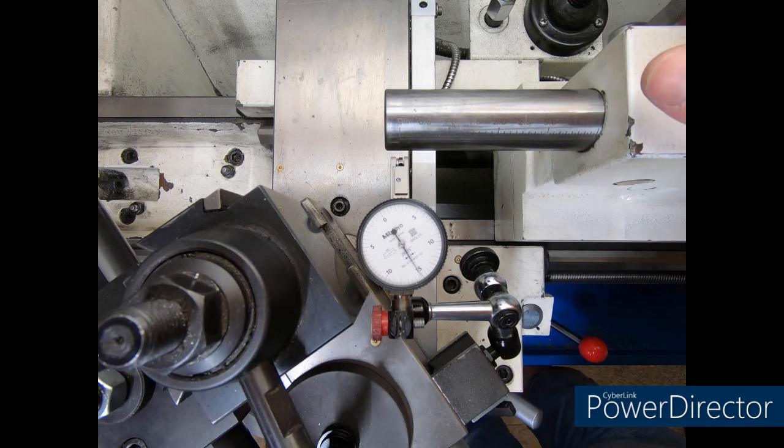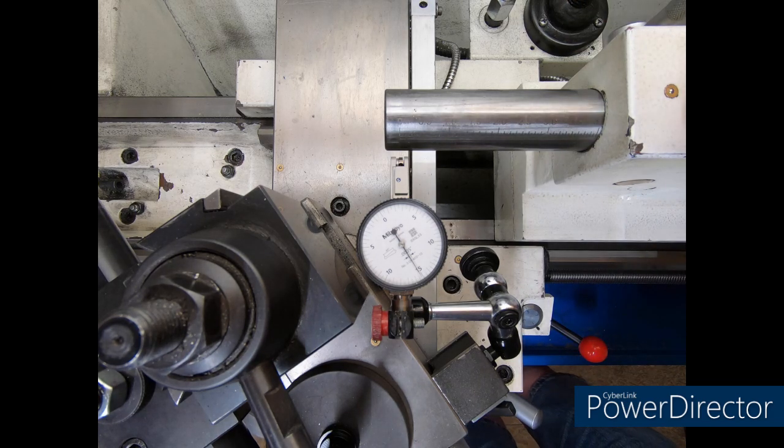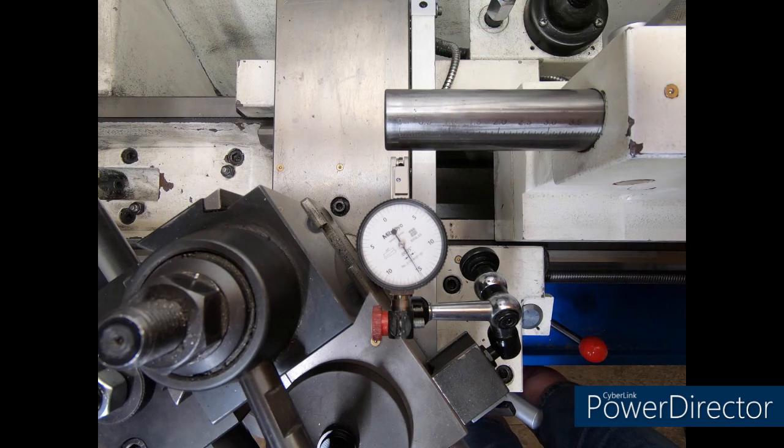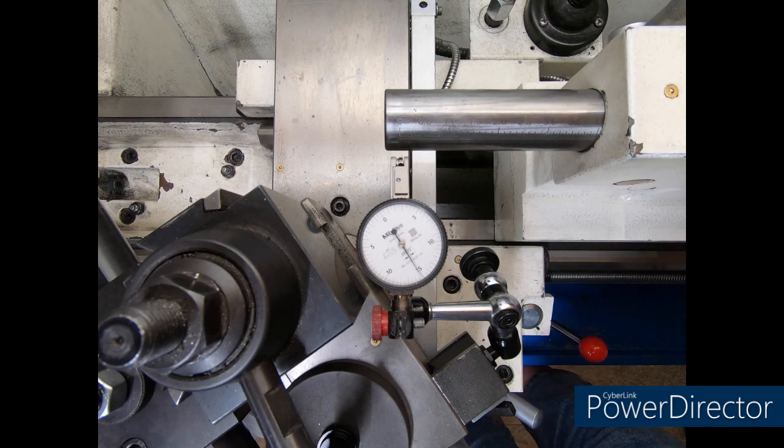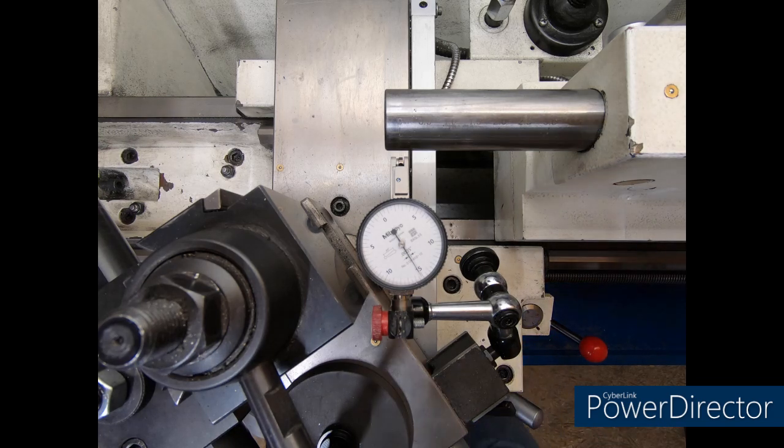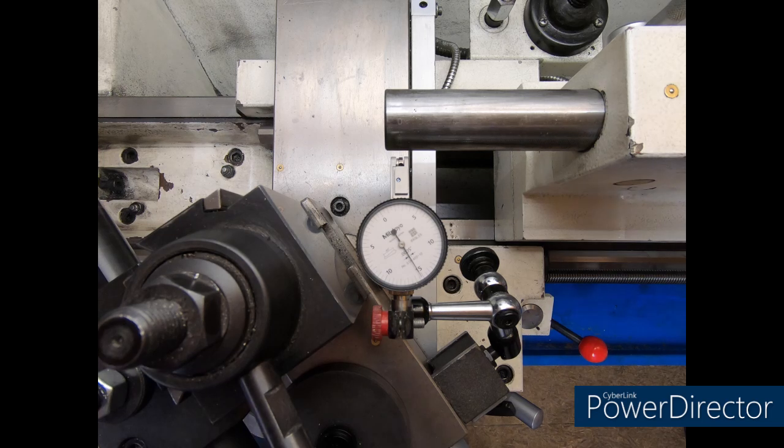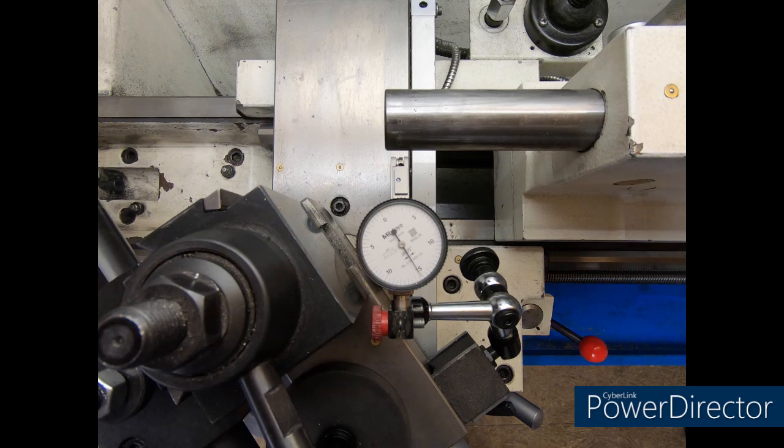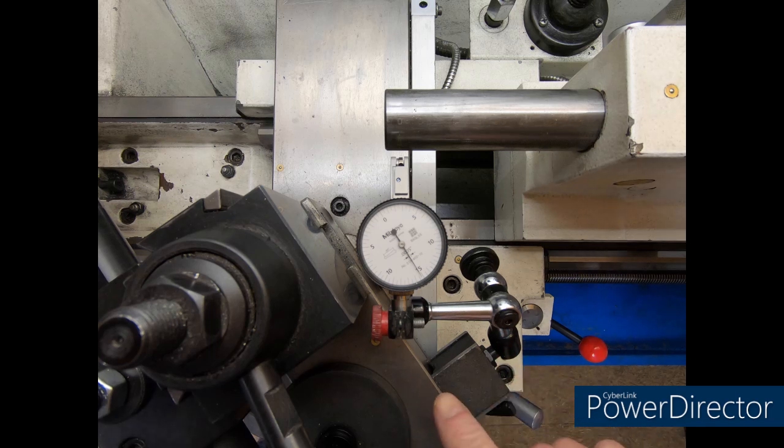I took a protractor and set my compound to a rough 55 degrees, then I went ahead and dialed that compound in dead on. The compound is set dead accurately right now. I didn't want to waste time in the video tapping my compound back and forth trying to get a zero, so I preset it. At this point, we have our indicator mounted to our compound—it must be mounted to the compound.